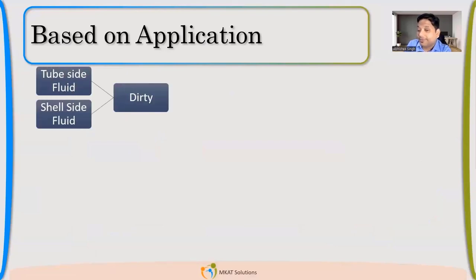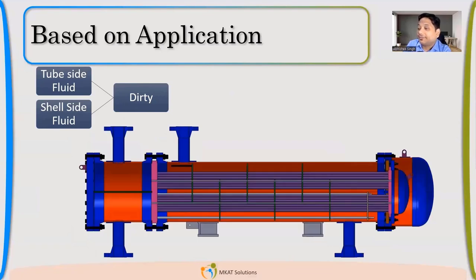Now, what if I have tube side fluid also dirty and shell side fluid also dirty? What to do in that case? If both the fluids are dirty? Floating, yes. Absolutely right. So the solution for that is floating. Even kettle type we can have, but kettle type, the purpose is different, so we don't use for this purpose. So that is the reason this kind of exchanger you'll always see for crude to crude heat exchange, which happens in oil and gas industry very frequently. So you'll always find AES kind of heat exchanger. So tube bundle also we can remove, clean it from outside. Tubes are straight and accessible from both sides. So we don't have any issue in cleaning.